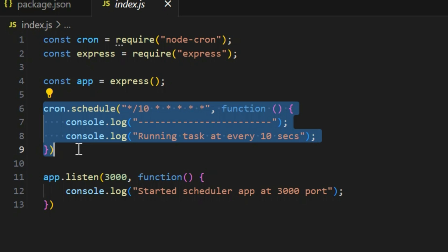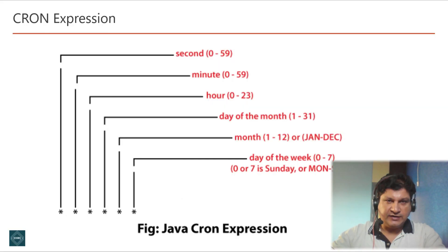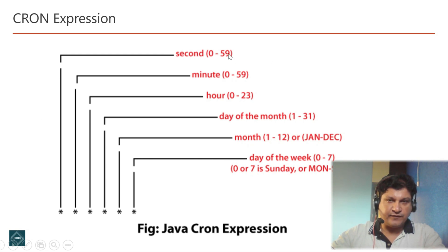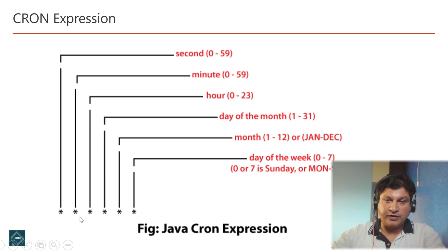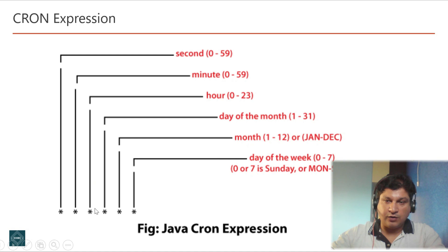Let's understand how cron expressions are formed. The cron expression has six placeholders, each representing a different time interval. The first asterisk represents seconds — from 0 to 59 — indicating at which particular second we want to run the job. The second asterisk represents the minute, specifying at which minute of an hour we want to run the job. The third asterisk is for hours, telling us at which hour of the day — every 4 hours, every 2 hours, or a specific hour like 3 o'clock or 4 o'clock.